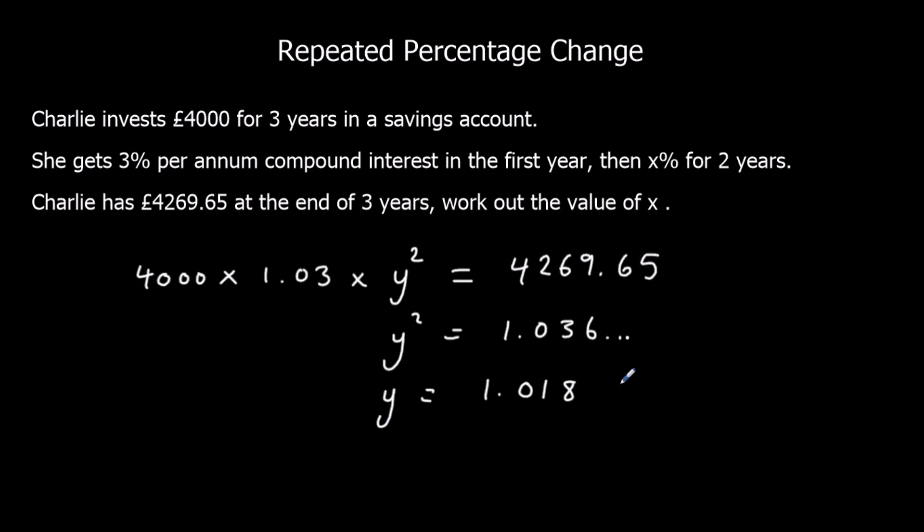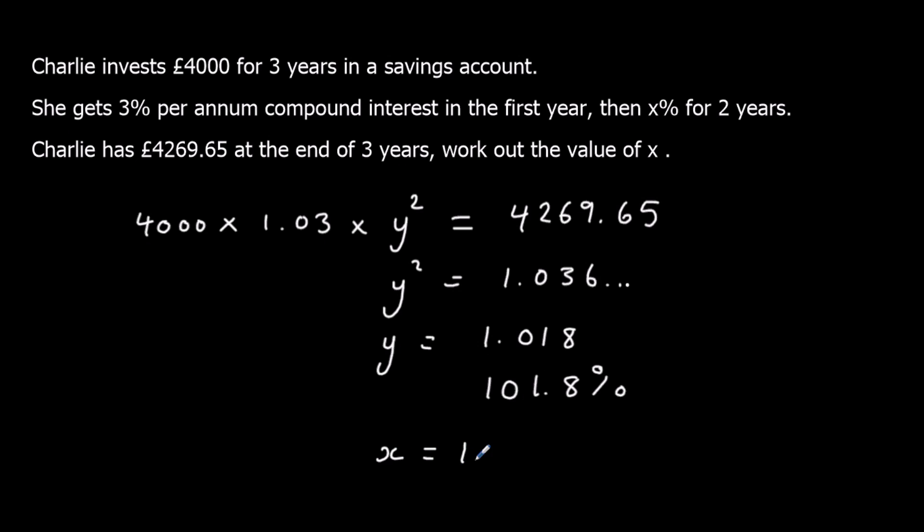So that's my multiplier. So that's 101.8%. So if I've got 101.8% of what I had in the previous year, that means I've added on 1.8%.